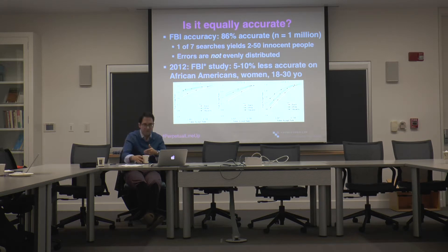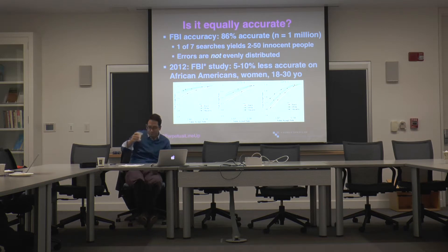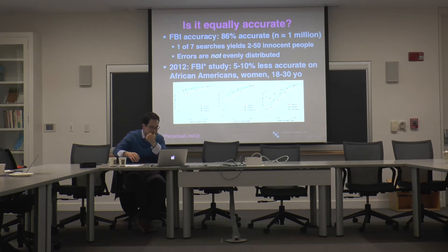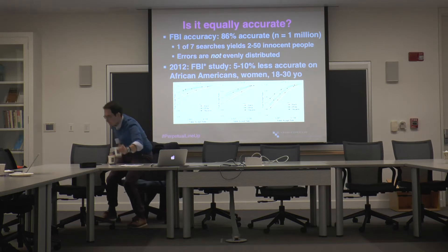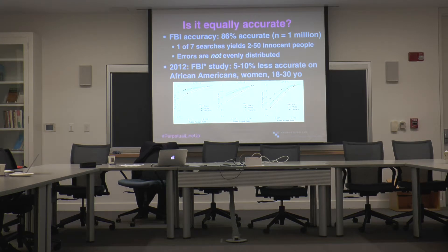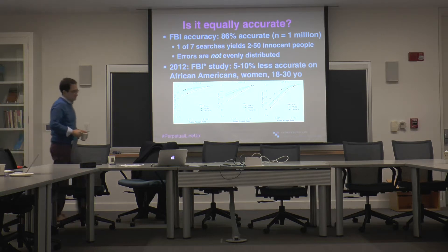Jonathan's clarification: The study only measured the false negative rate — false accept rate versus true accept rate — so it didn't give us numbers to conclusively say the system will misidentify more African Americans, only that it will fail to identify more African Americans. We can infer it's likely also the case that there are more false positives on African Americans, but the study didn't produce that data. The study is now five years old, and attempts to contact the authors for updates have been unsuccessful.